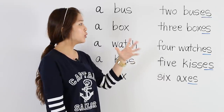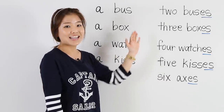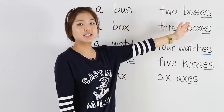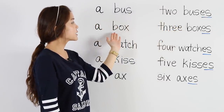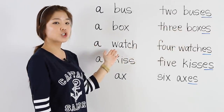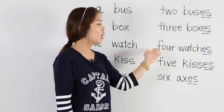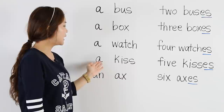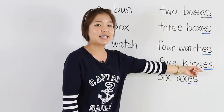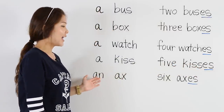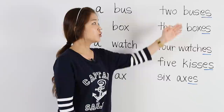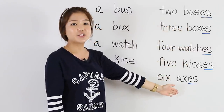To make them plural or more than one, here we add ES. A bus becomes two buses. A box becomes three boxes. A watch becomes four watches. A kiss becomes five kisses — add the ES. And an axe becomes six axes. So don't forget, we have to put ES to make these nouns plural.